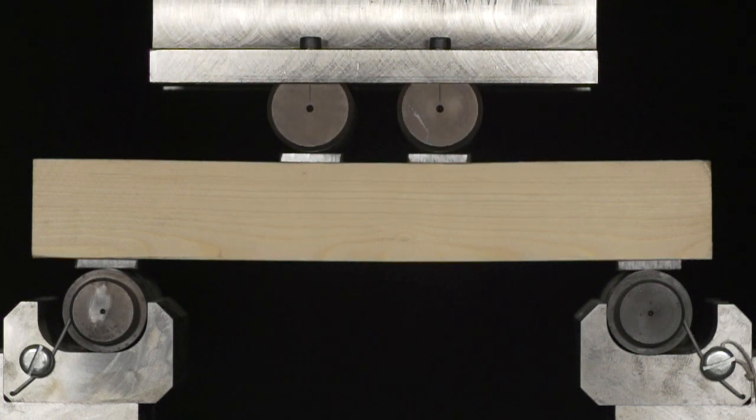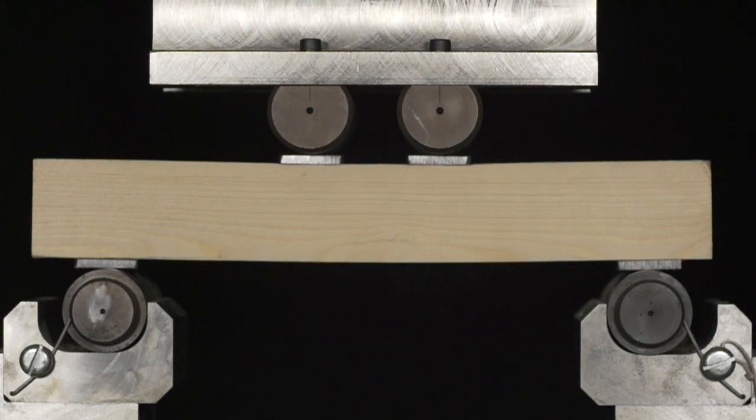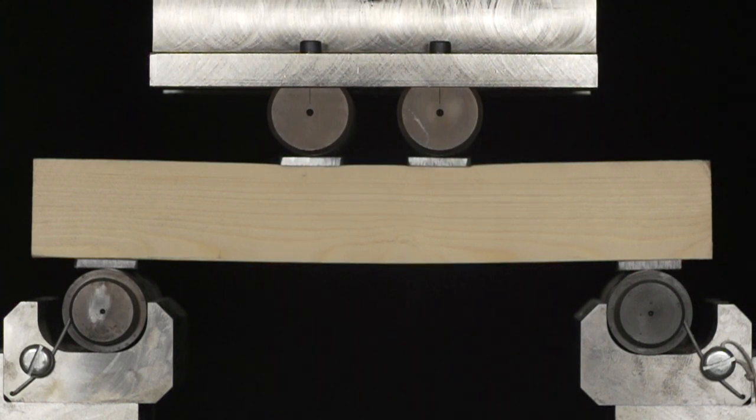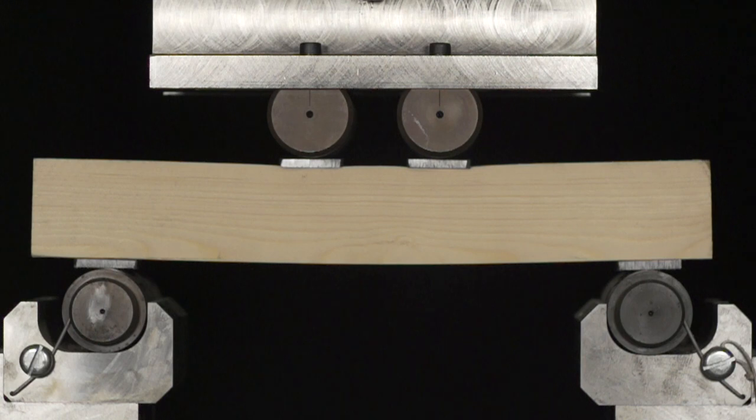This continues until the extreme fibre stresses in the tensile zone reach the failure strength of the wood and brittle fracture occurs.